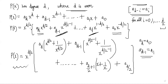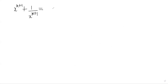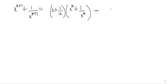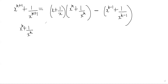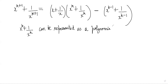The benefit of writing it like this is that each bracket has the form x^k + 1/x^k for some integer k. We can show that any expression of the form x^k + 1/x^k can always be written as a polynomial in the variable (x + 1/x), using the recurrence: x^(k+1) + 1/x^(k+1) expressed in terms of x^k + 1/x^k minus x^(k-1) + 1/x^(k-1).